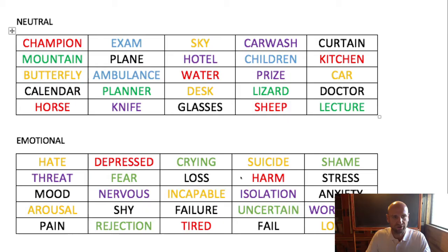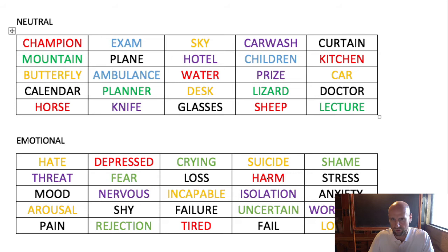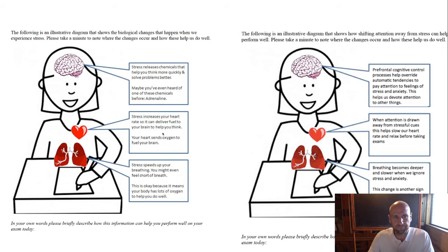Let me quickly explain the emotional Stroop test. This is taken from materials I created, so you can replicate it in class. In the neutral condition, you see a range of words written in different colors and you say the color of the word, noting how long it takes. In the emotional condition it's the same, but the words have some emotional component to them.